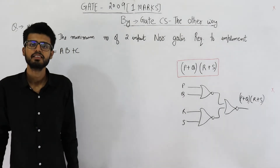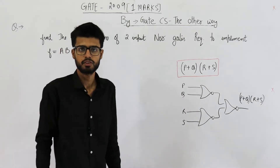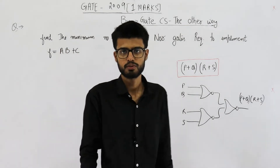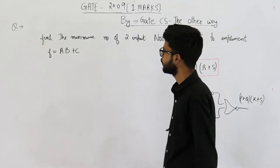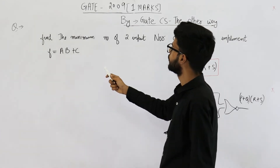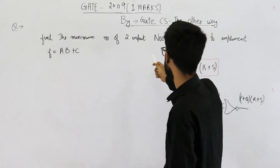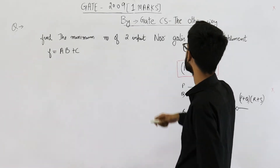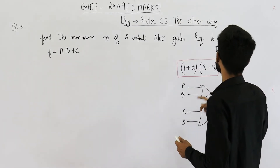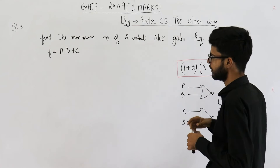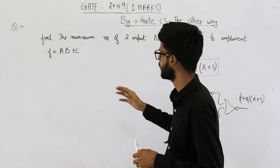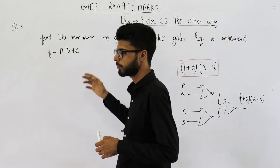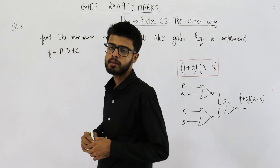Welcome back students. This is one more question from the GATE 2009 exam. The question is: find the minimum number of two-input NOR gates required to implement the function F, where F is AB plus C.